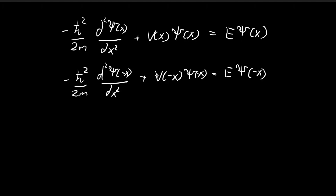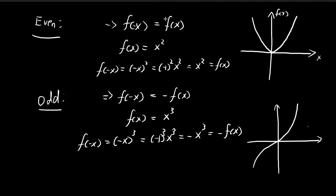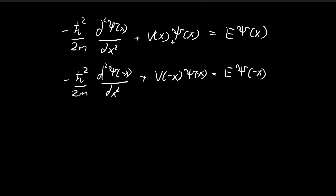We're given that the potential is an even function. Recall that for an even function, f(-x) = f(x). So if the potential is an even function, then V(-x) = V(x). Substituting this back, we obtain the time-independent Schrödinger equation again.